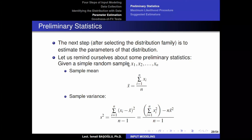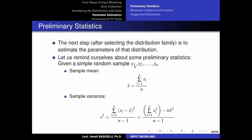Let's go over some preliminary statistics. We always have a simple random sample in the form of data — observations from the first to the last. We define the sample mean as the average value of these observations. The sample variance is defined as the sum of the squared deviations from the mean divided by n minus 1.